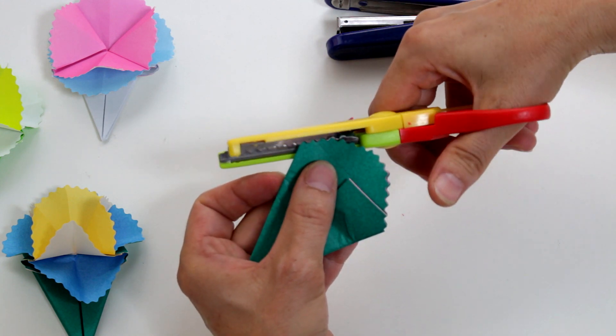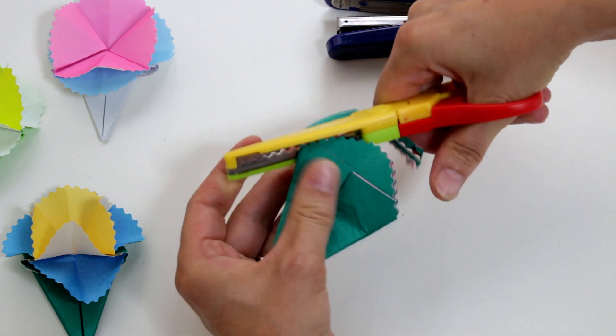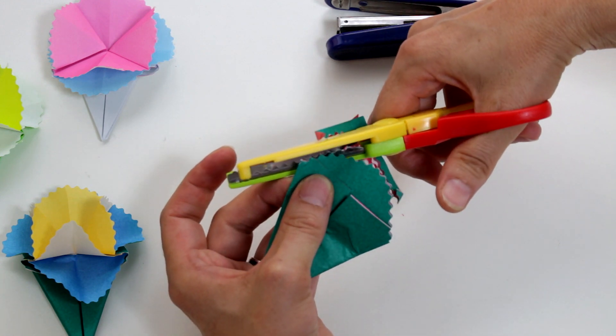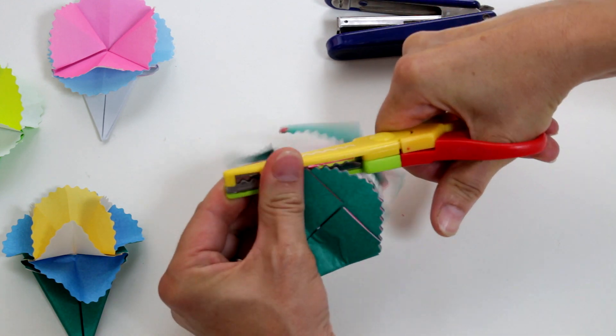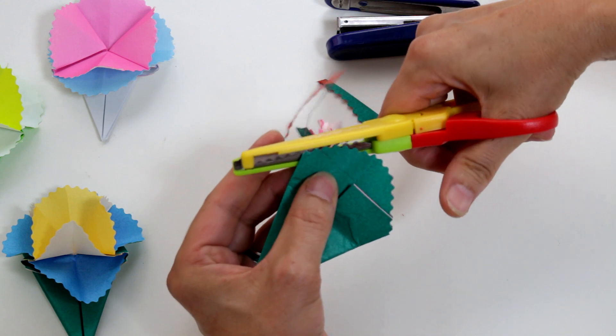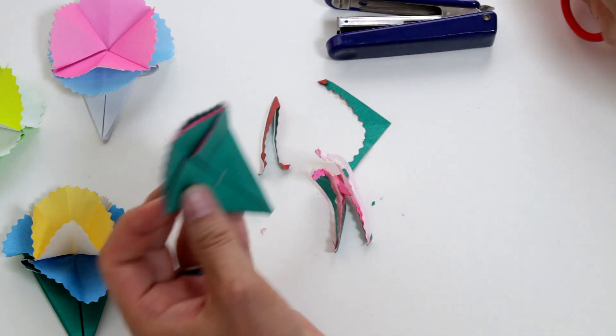It's a little bit hard because there are two origami paper layers. Okay, now we did it.